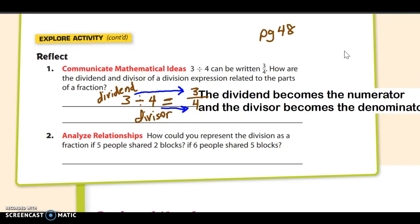All right, that's good. Answer number two reads: analyze relationships. How could you represent the division as a fraction if five people shared two blocks, if six people shared five blocks? So let's go back and compare this. What we did on the previous page, we had three blocks of clay divided by four people. This one right here is going to be two blocks of clay divided by five people. So two blocks of clay divided by five people is equal to, well, we just decided that the dividend becomes the numerator and the divisor becomes the denominator.